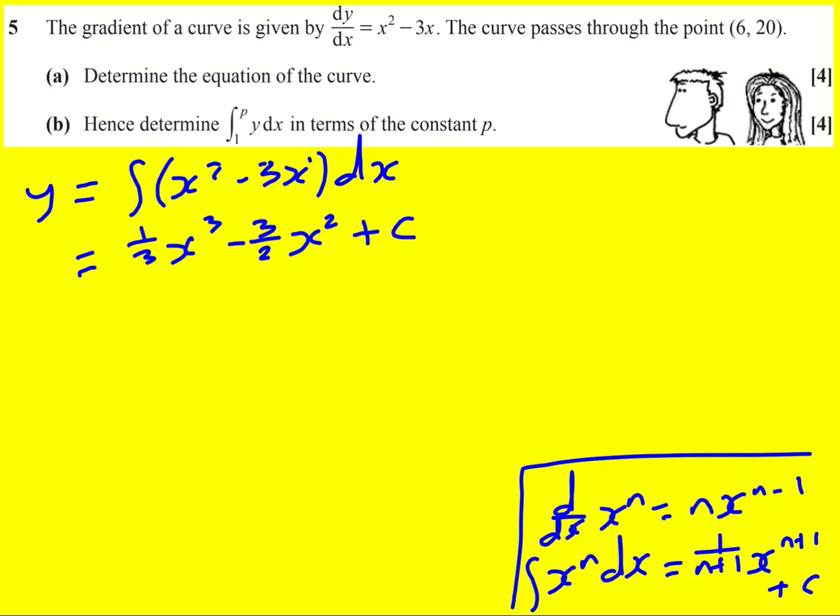And then we've got this arbitrary constant because at the moment there's lots of functions, lots of cubics that have this gradient function, but only one of them that's going to go through a particular point, 6, 20.